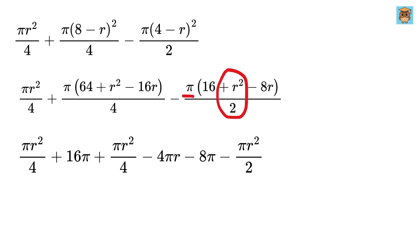This will be minus pi r square over 2. And then this will be 8 pi r over 2, or 4 pi r. Now, look at these two. It will be 2 times pi r square over 4, or pi r square over 2. And this gets cancelled with this one.